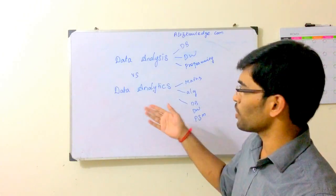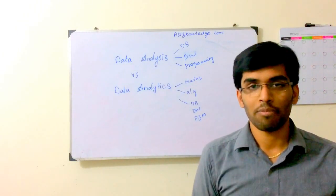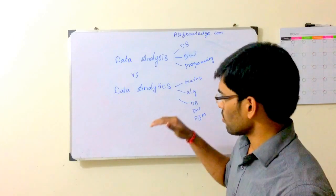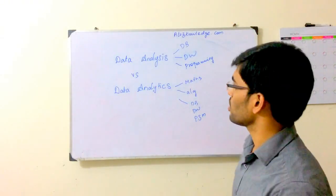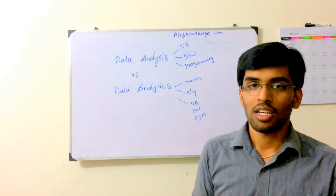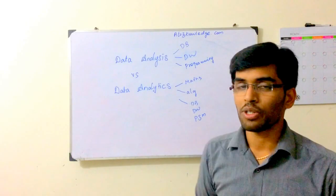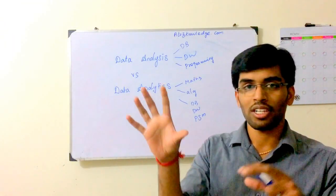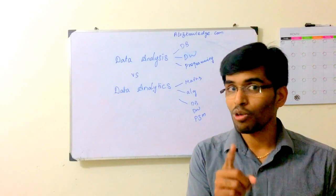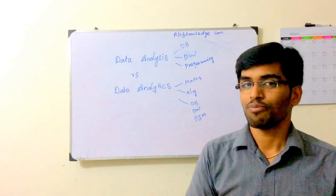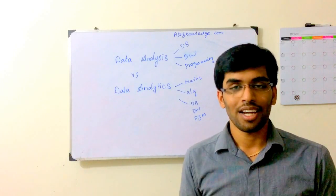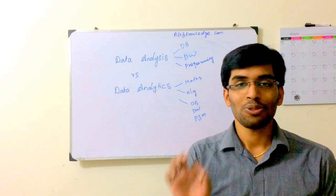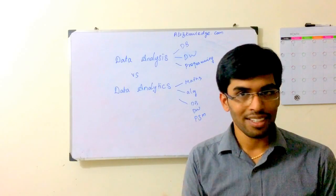We need more knowledge in Mathematics and Algorithms. To explain the difference: analysis deals with the past, and analytics is about what we can predict going forward. If you want to talk about visualization or visualization tools, that is part of both data science and analytics, but it is only a subset.